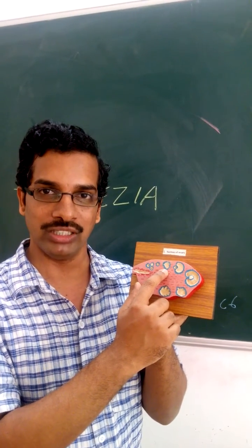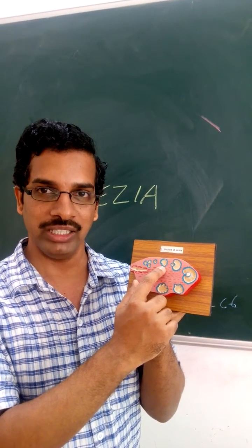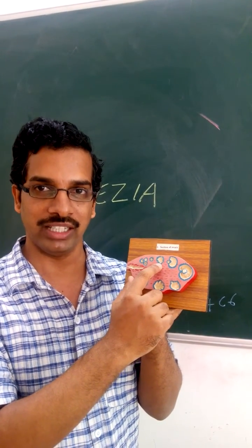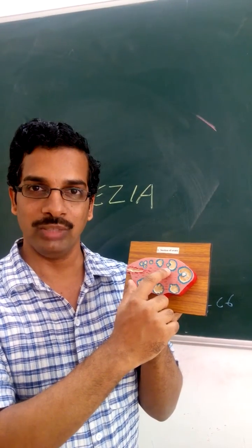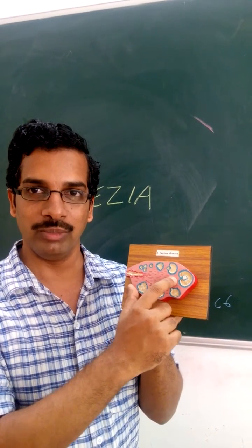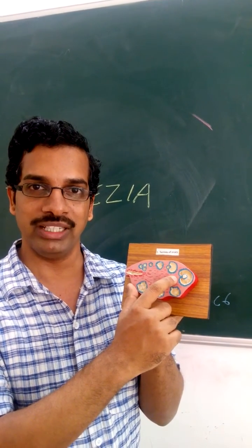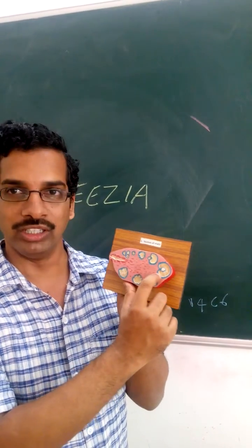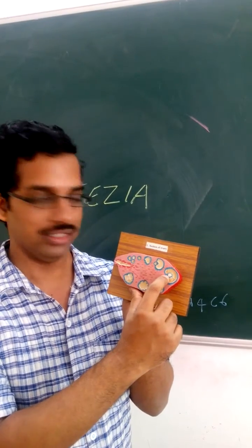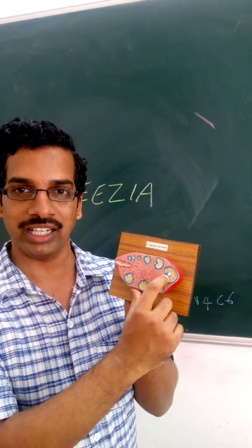These primary follicles will develop into secondary follicles. With every cycle, the secondary follicles will mature — one will mature and form the Graafian follicle. In the Graafian follicle, as you can see, there is one white-colored cell.